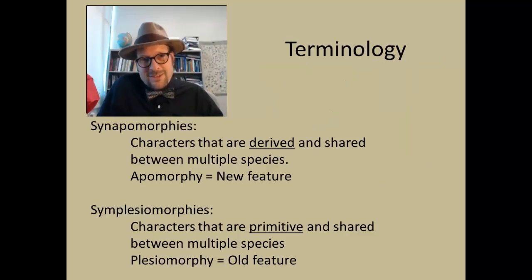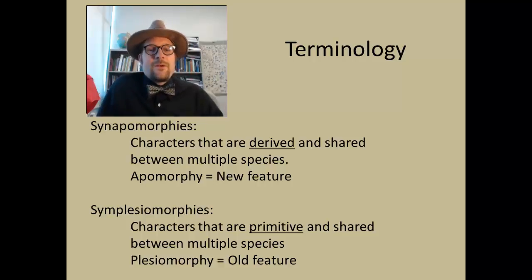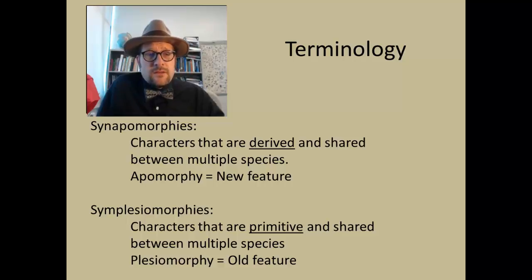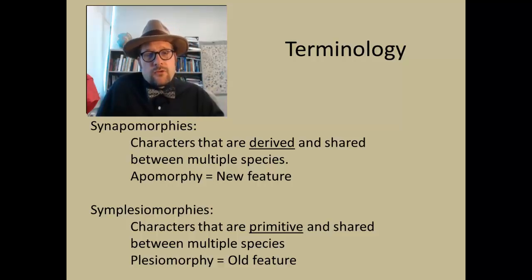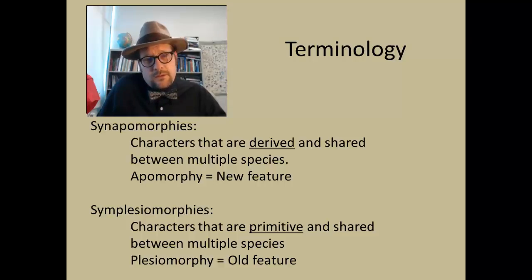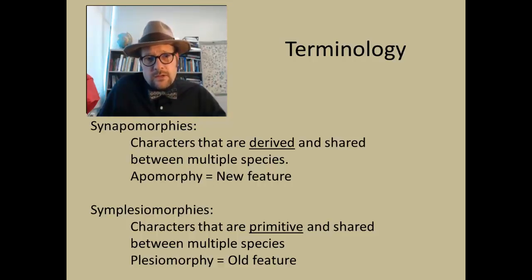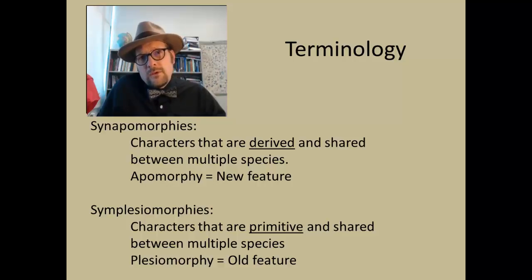Now let's talk about some difficult terminology in phylogenetic systematics. Synapomorphies are characters that are derived — shared between multiple species. Synapomorphies are essentially shared derived characteristics. An apomorphy is a new feature that is not necessarily shared. When we name new species, we are often looking for an apomorphy — some new feature completely different from all the others.